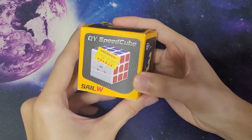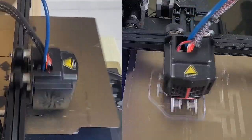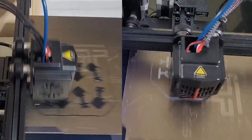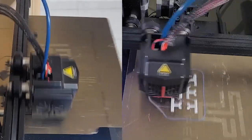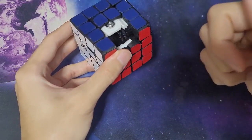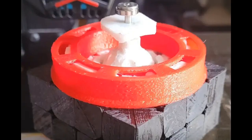And I had an extra QiYi Sail core lying around, and I just reprinted the two odd-to-even conversion shells over that other 3x3 core, which is why the cube currently has a black core, but if you look at older pictures of it, there's a white core.